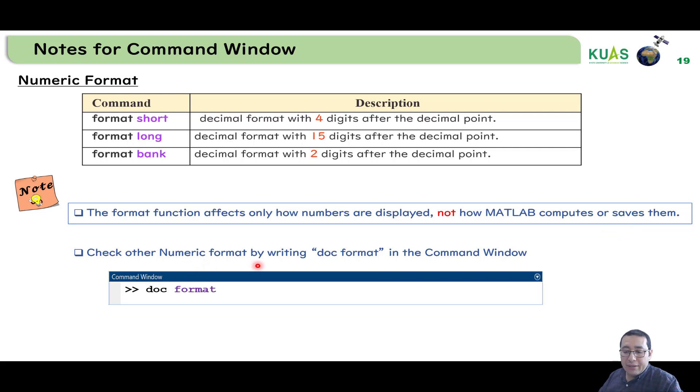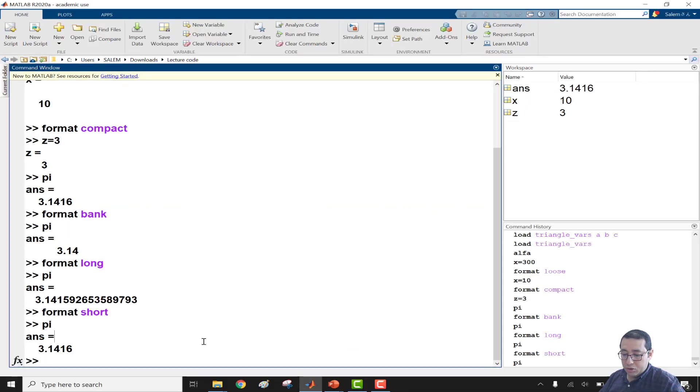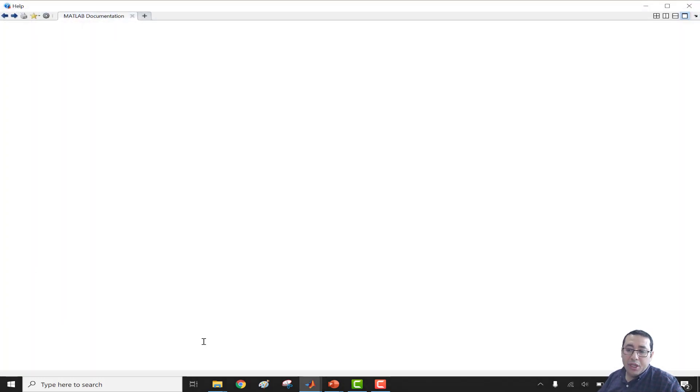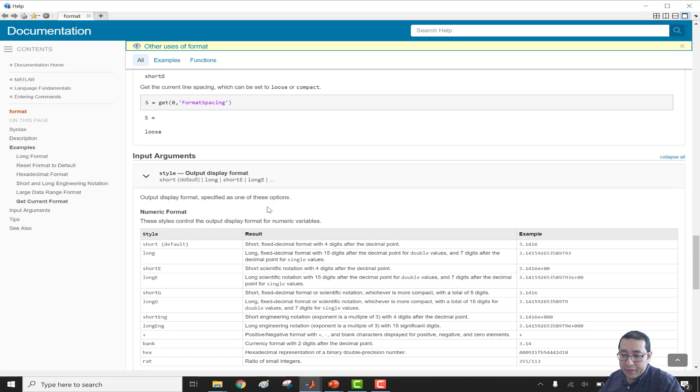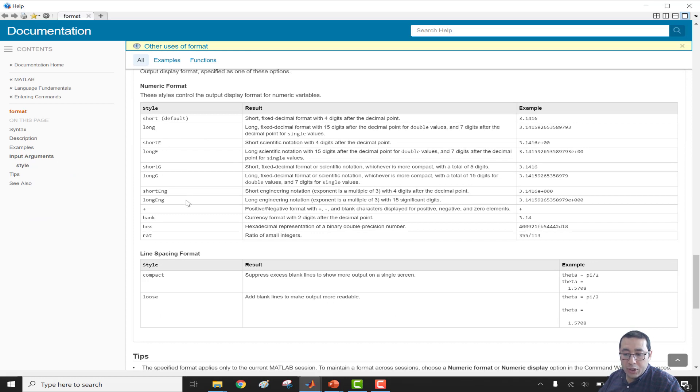And to check other formats, like the numeric format, just there are several ways, as I'm going to show today, like how to find help with MATLAB. Just write in your command window, doc format, to have all documentation related to format, and you can find many. For example, if I write in MATLAB here, doc and then format, a new window will appear with all documentation about format and different styles and different types of format. And here we selected short and long and bank, but there are other formats. Please check, and you will find very interesting information.